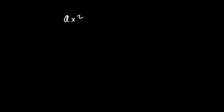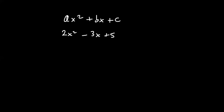Hi everyone. In this video, I'll show you how to factorize trinomials, or quadratics as they're also known. A trinomial is basically an expression of the form ax squared plus bx plus c, where a, b, and c are constants — that just means numbers — and x is the variable. For example, 2x squared minus 3x plus 5 would be an example of a trinomial.